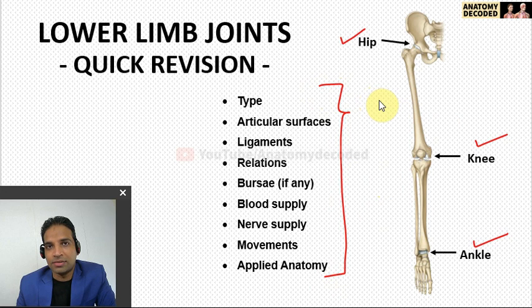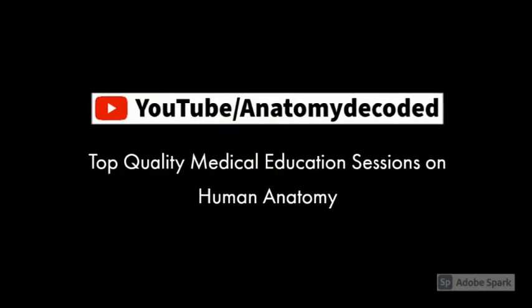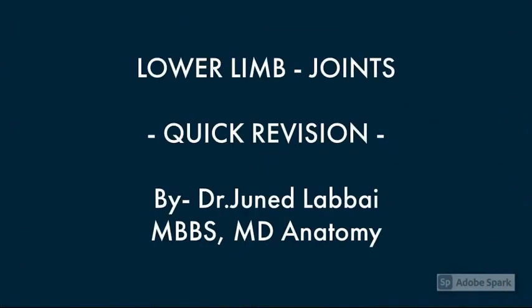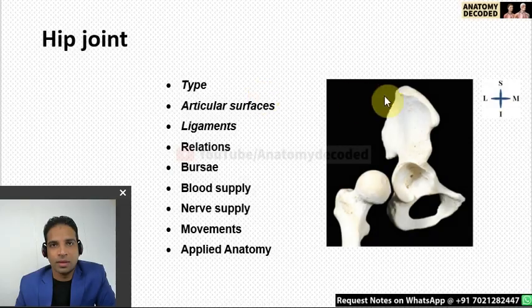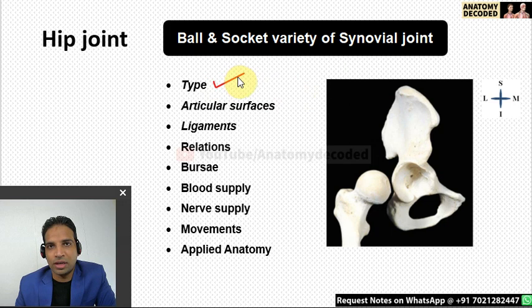Just like I covered the upper limb quick revision session in the previous video, I'll be covering the lower limb session as well. So let's start with the hip joint. The hip joint is an example of a ball and socket variety of synovial joint.